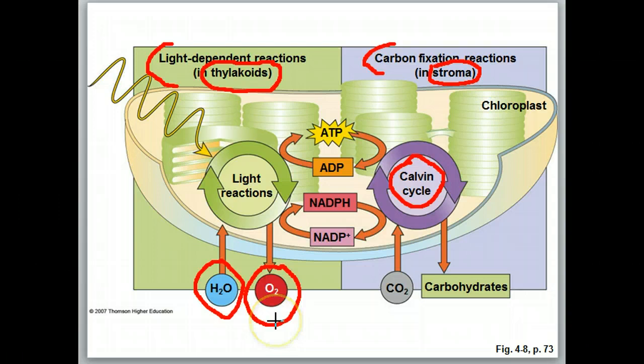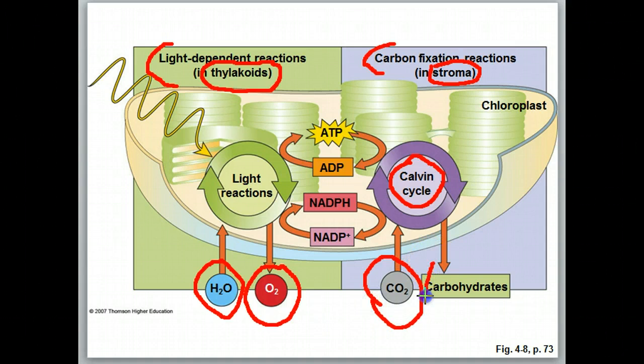All the oxygen coming off of photosynthesis comes from water, just like all the oxygen taken in for respiration ends up in water. Over here in the Calvin cycle, this is where we're going to have the intake of carbon dioxide, and then we're going to have the production of carbohydrates.